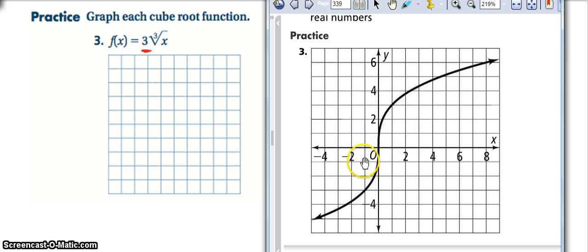Same thing over here. It would have been negative 1, negative 1, multiplies by a factor of 3. So everything is going to look a whole lot bigger. But again, it still does not affect the domain or range.